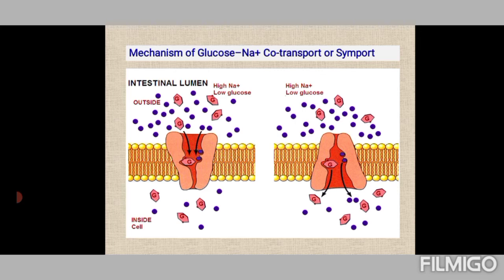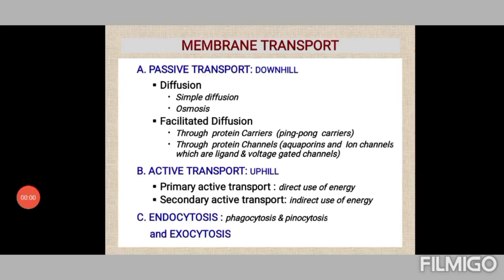The symport mechanism represents secondary active transport because it involves indirect expenditure of energy, mostly to externalize one of the molecules that entered the cell. In the co-transport or symport of sodium and glucose, both molecules are transported simultaneously in the same direction — into the cell interior. The interior already contains plenty of sodium, so energy is used to remove the extra sodium ions that entered the cell along with glucose.